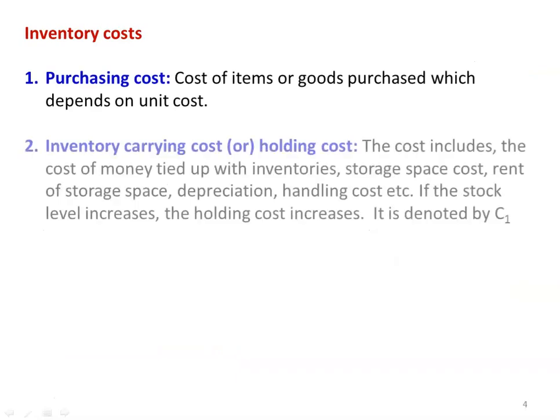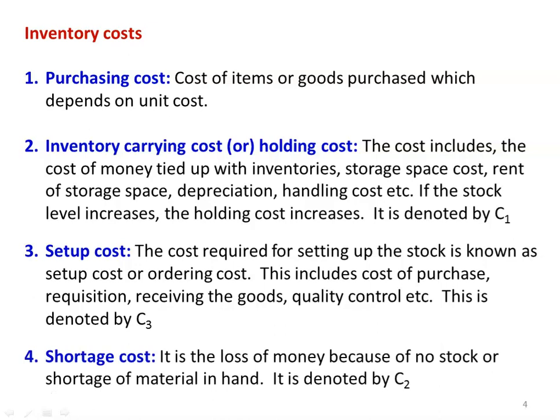Inventory cost — there are four different types of cost involved in inventory. First is purchase cost: the cost of items or goods purchased, which depends on the unit cost. For example, 100 items multiplied by unit cost gives the purchasing cost. Second is inventory carrying cost or holding cost, which includes storage space rent, depreciation, handling cost, and everything required for holding the item inside the factory or department store. The holding cost is denoted by C1.